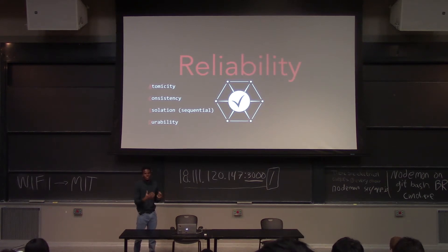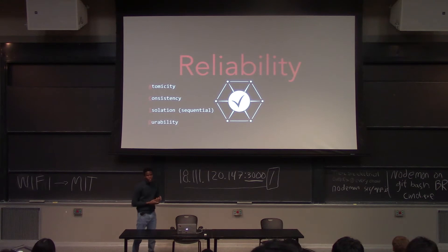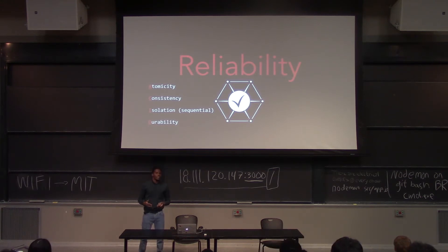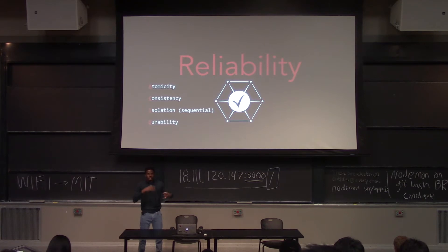Atomicity gives you certainty about the outcome of your transaction. The C in the acronym stands for consistency, which means that if you're doing a specific transaction today and you do that same transaction ten years from now, the result will be the same. It doesn't matter when you do it — it's consistent between transactions.